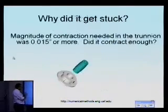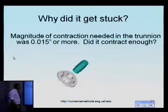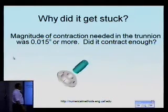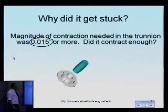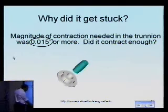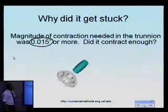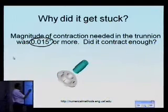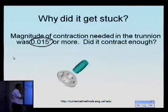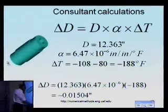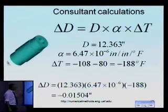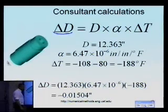So why did it get stuck? According to specifications — based on something called Fn2 and Fn3 fit — a contraction of 0.015 inches was required before putting the trunnion into the hub. The question arose: did we actually get that 0.015 inches of contraction? Maybe it got stuck because we didn't have enough contraction. Some calculations were done using the physics formula to calculate the amount of contraction which would take place.